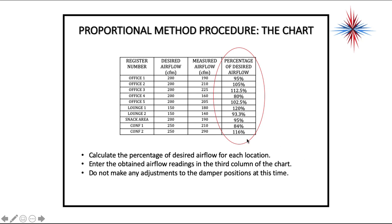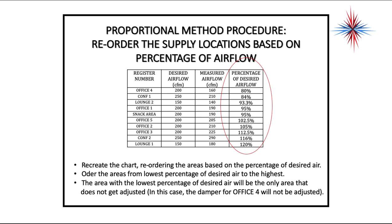Calculate the percentage of desired airflow for each location and enter the readings in the chart. Don't make any adjustments to damper positions at this time. Now comes the tricky part: recreate the chart, reordering it from the lowest percentage of desired air to the highest. Many technicians use an Excel spreadsheet and simply sort the data column from lowest to highest. The area with the lowest percentage of desired air is the only area that does not get adjusted — in this example, the damper for Office 4 will not be touched.